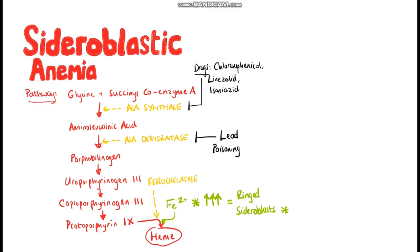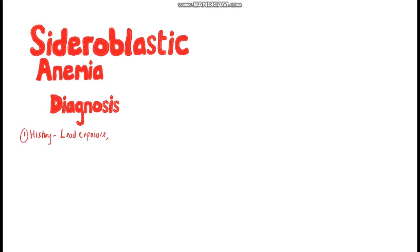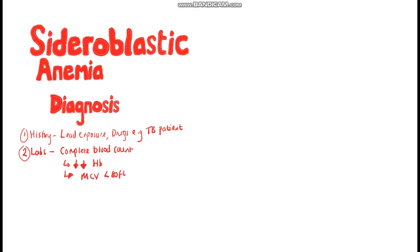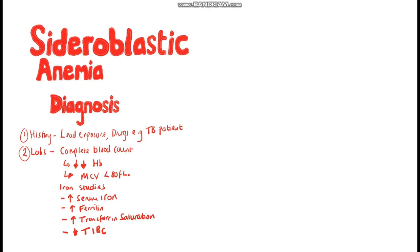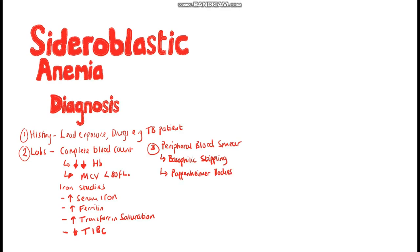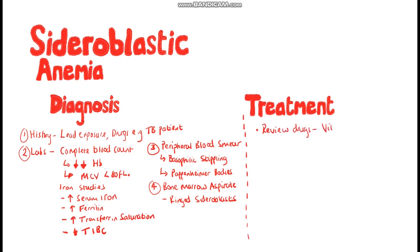Ringed sideroblasts stain blue with Prussian blue stain. To diagnose sideroblastic anemia, the history may include contact with lead or a TB patient treated with isoniazid. In labs, you'll see a moderate to severe decrease in hemoglobin and a microcytic MCV. Serum iron, transferrin saturation, and ferritin will all be increased, while total iron binding capacity will be decreased. Peripheral blood smear shows erythrocytes with basophilic stippling — cytoplasmic granules of RNA precipitates — and Pappenheimer bodies, which are cytoplasmic granules of iron. Bone marrow aspirate shows the ringed sideroblasts. Treatment involves vitamin B6 if the patient is on isoniazid, transfusions for severe anemia, and a bone marrow transplant for genetic causes.